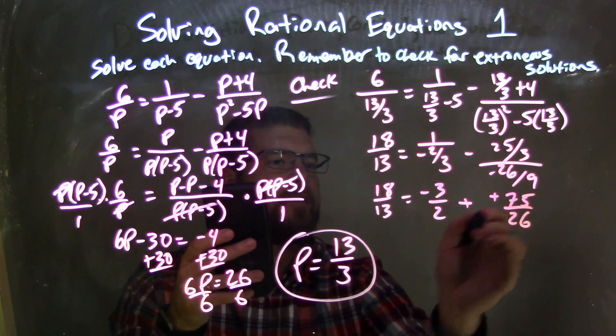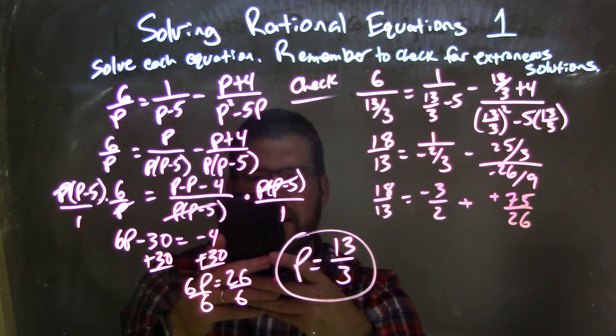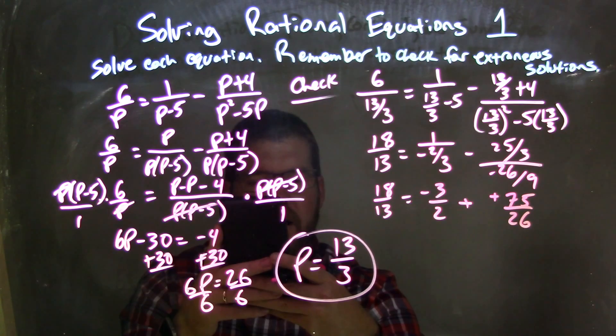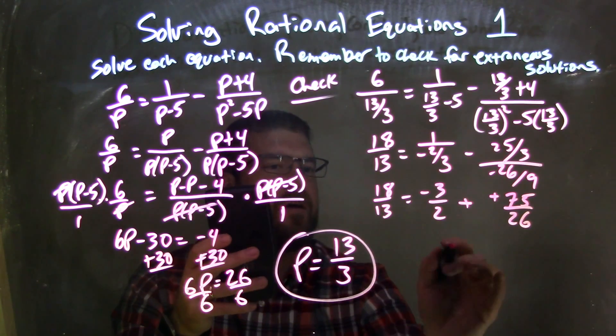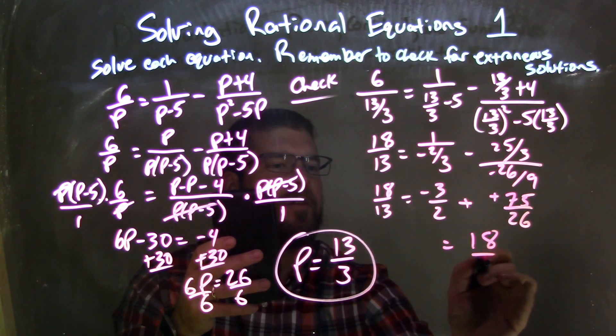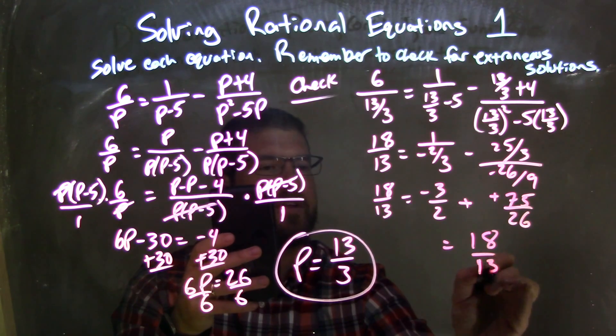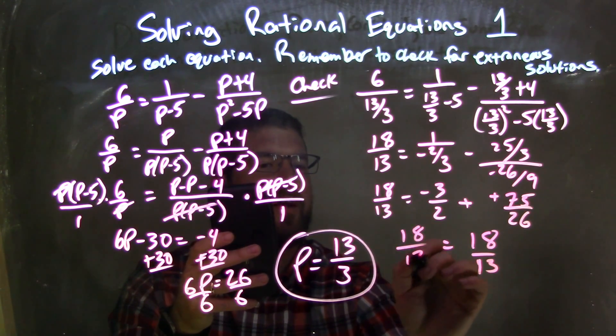Well, that becomes plus a positive, so I times it by negative 1, and we add that plus a negative 3 halves, and that comes out to be right here 18 thirds, or 18 over 13, sorry, going to 18 over 13 right there.